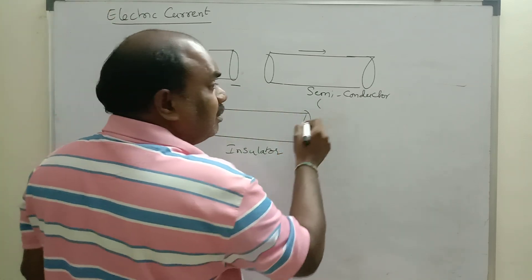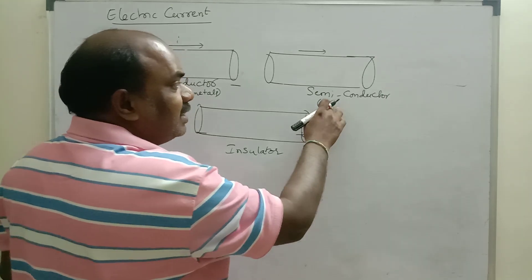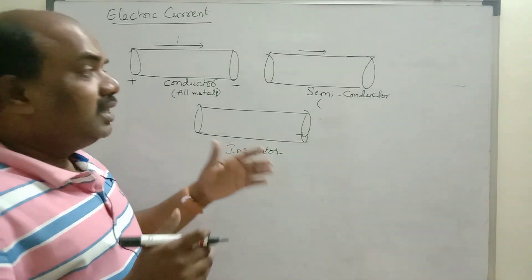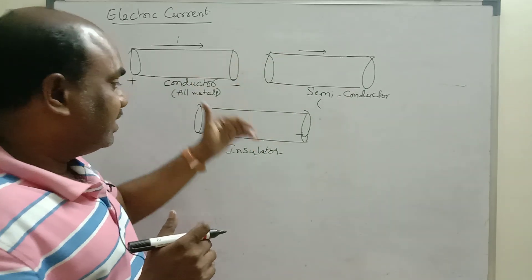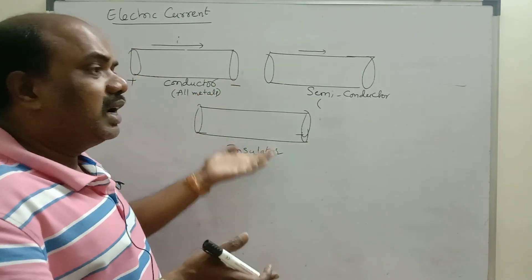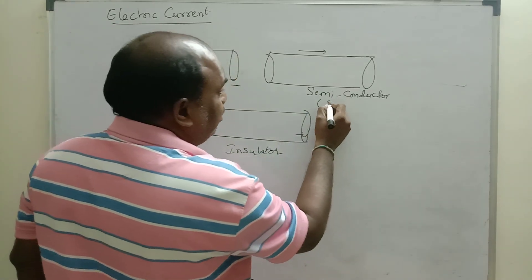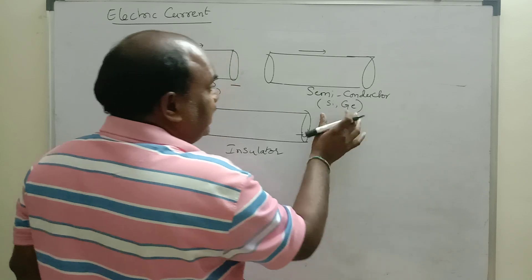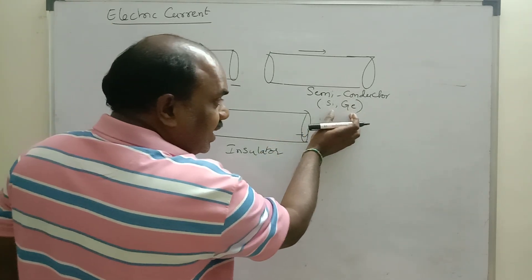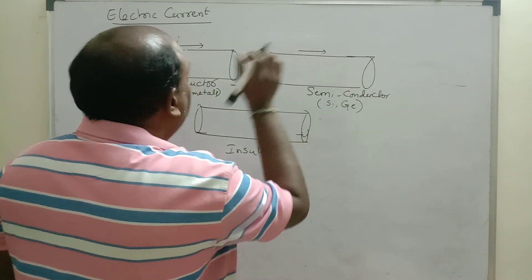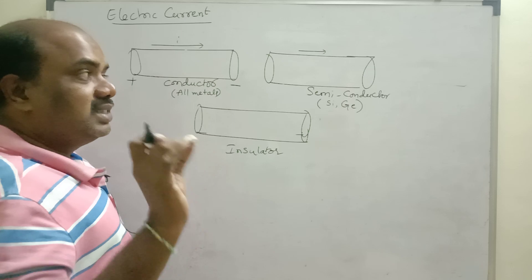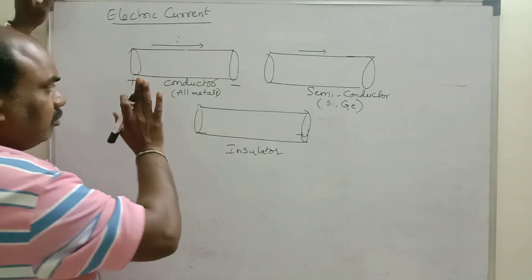Semiconductors are nothing but fourth group elements in the periodic table. Semiconductor means it is not a conductor and it is not an insulator — its behavior is in between conductors and insulators. Current does not flow effectively, and it is not a good conductor either. Examples are silicon and germanium. Graphite also comes under semiconductors. These elements are used in manufacturing of diodes, transistors, and so on.